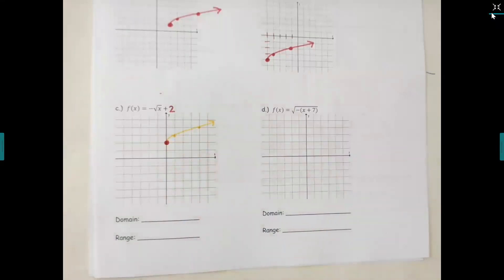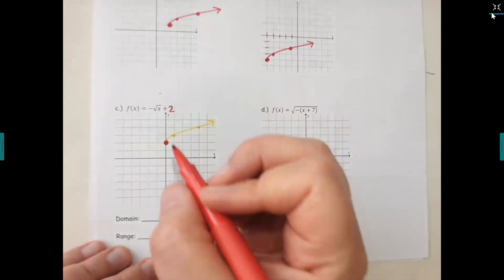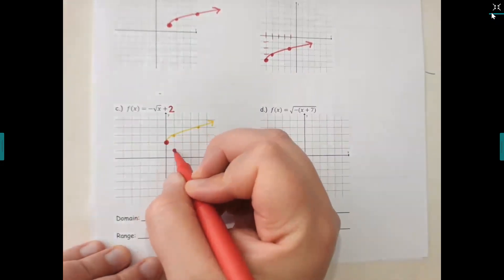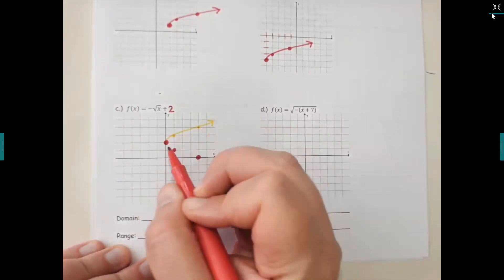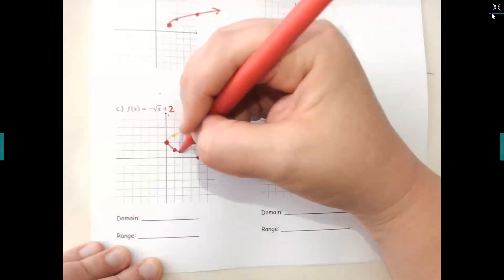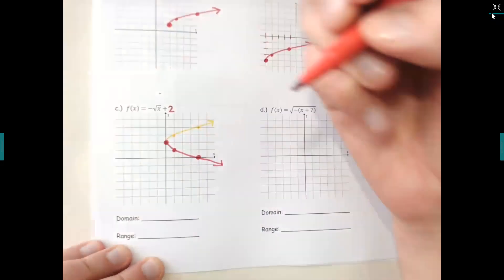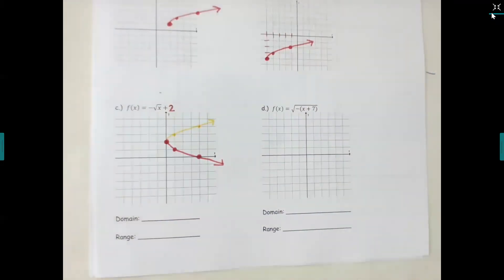For question c, I'll change the seven to a two so we stay on the grid. The plus two shifts us up — so go up two. Normally I would go up over one, up over three. But this time there's a negative, which flips it down. So instead of going up and forward, go down forward one and then down forward three.